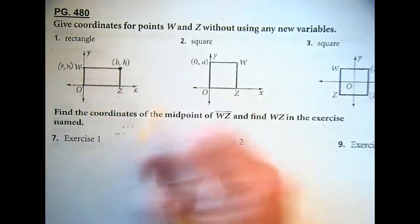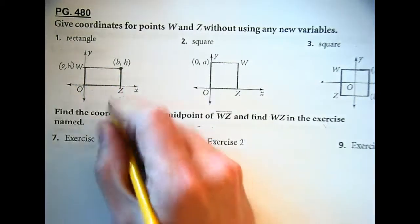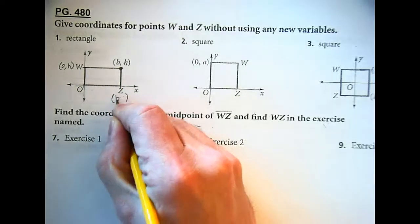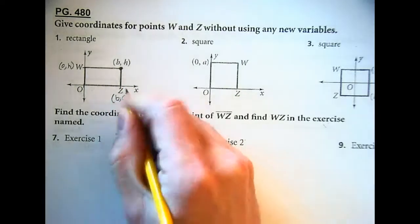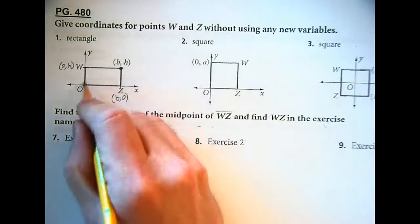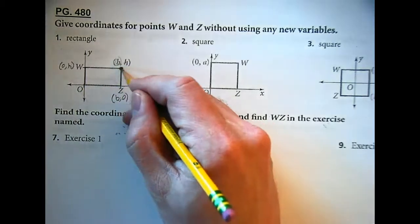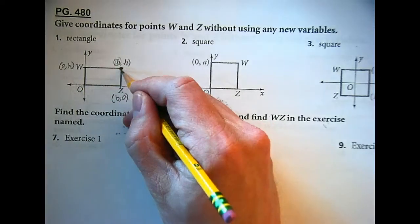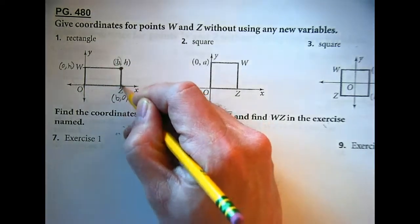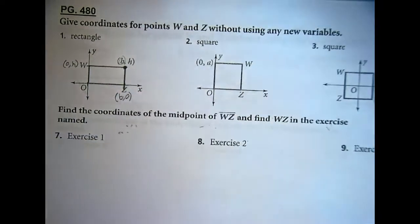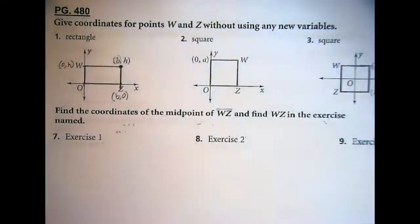For Z, Nick got (b, 0) — same logic. On the y-axis you're at x equals 0, but Z is on the x-axis, so y equals 0. The x coordinate is b, because if we follow that down it's the same x coordinate. So Z is at (b, 0).